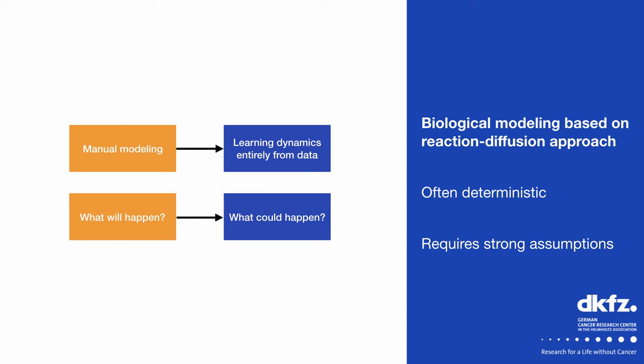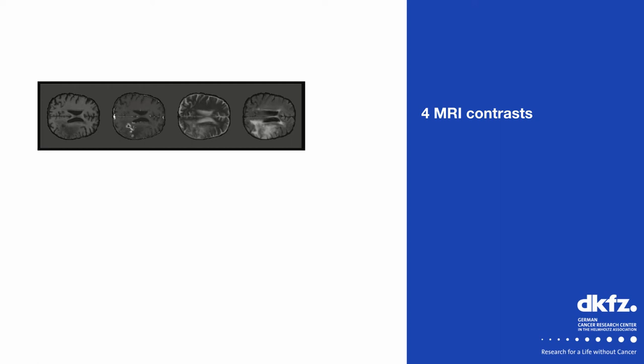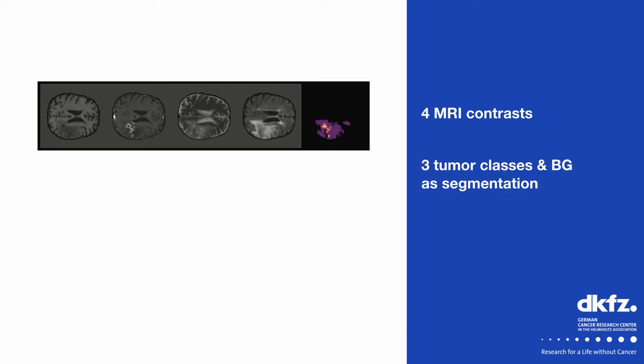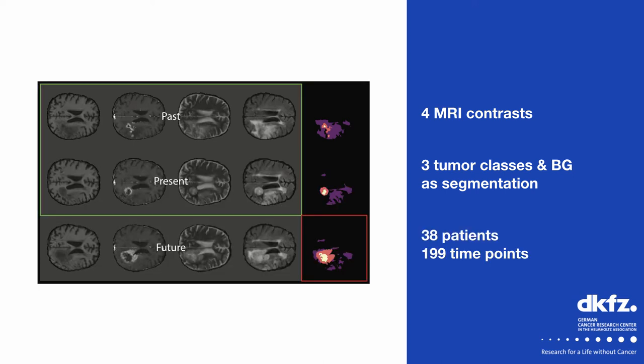Before we get into the details of our approach, it's important to understand what kind of data we're working with. For a given patient at a given point in time, we have four co-registered MRI contrasts with different characteristics, meaning a 3D volume with four channels. We also have a segmentation map that tells us the size and location of different tumor tissues. Our approach takes scans from two consecutive time points and predicts the distribution over segmentations for the next time point.